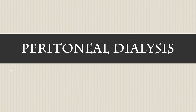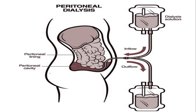The second process of dialysis is peritoneal dialysis. It is called peritoneal because in this procedure a membrane called the peritoneum — also called the peritoneal lining — acts as the semi-permeable membrane. This peritoneal lining is the lining of the abdomen, so the lining of the abdomen helps in the filtration of all the waste from your blood.